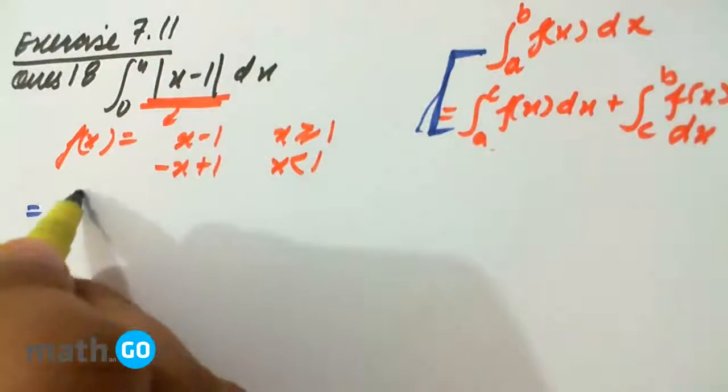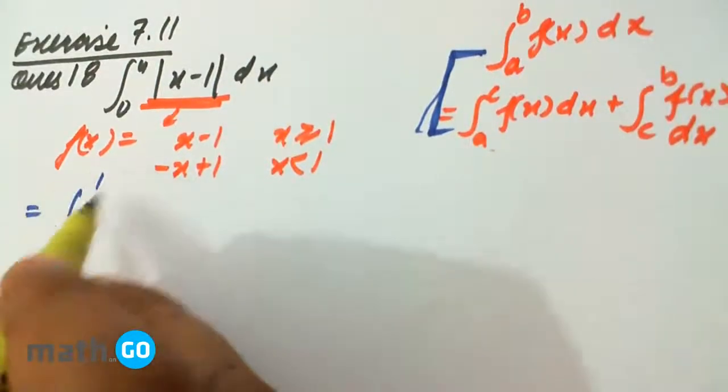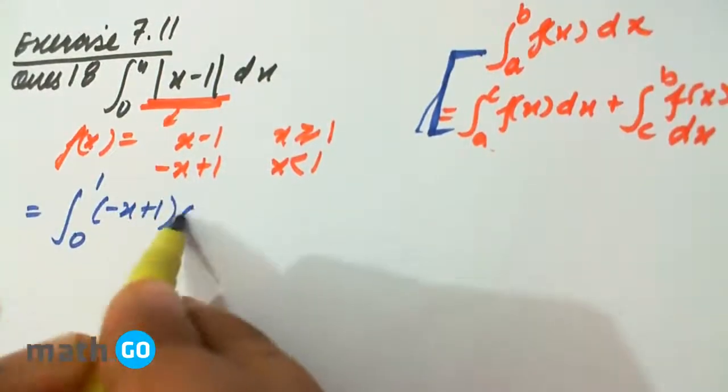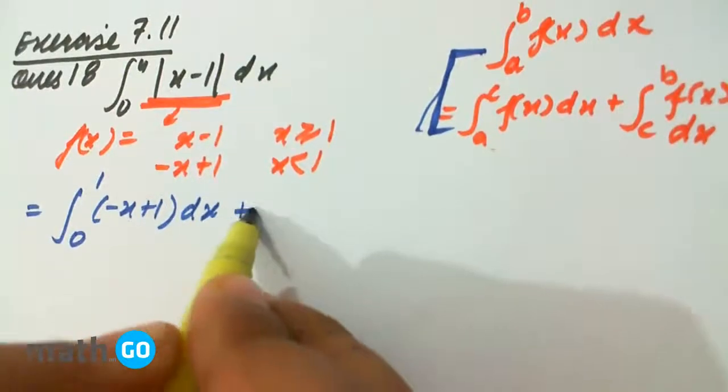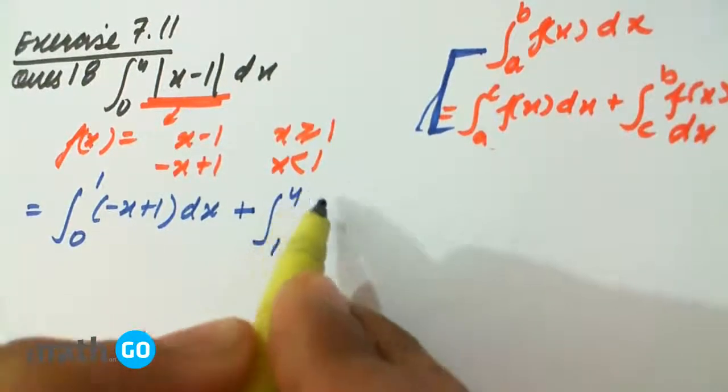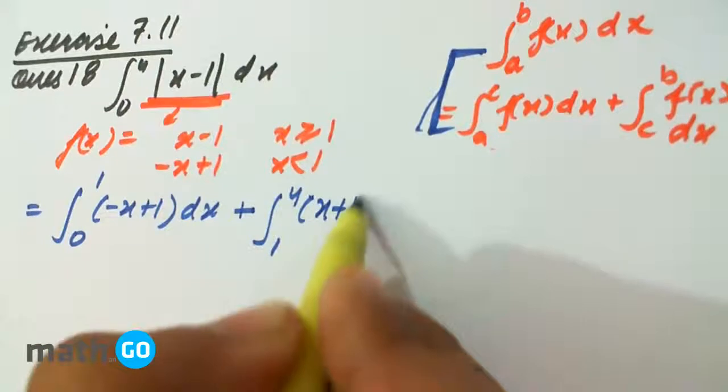We write it as integral from 0 to 1 of minus x plus 1 dx, plus integral from 1 to 4 of x minus 1 dx.